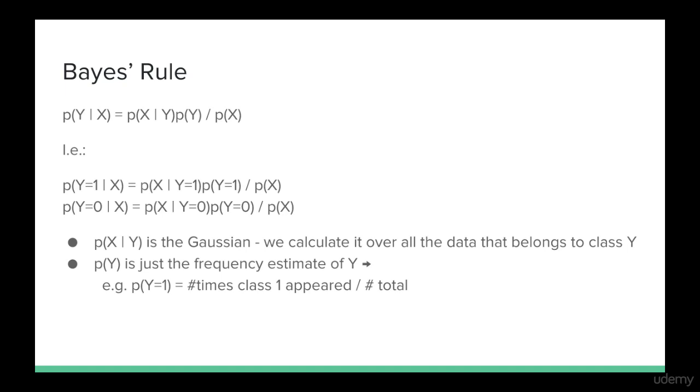The likelihood part is the Gaussian we just talked about. We would calculate this by taking the data from each class and getting their means and covariances. The prior can just be the maximum likelihood estimate. So for example, p of y equals 1 would be the number of times class 1 appears, divided by the total number of samples.